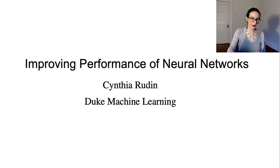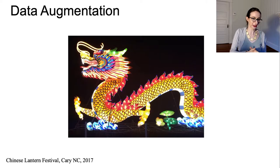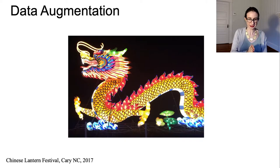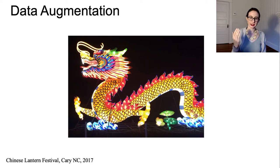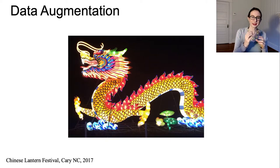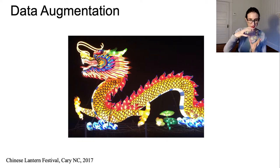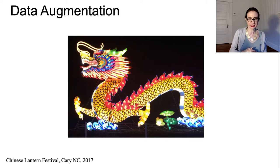Let's talk about some ways to improve the performance of our neural networks. First, let's talk about invariances. Very often we want neural networks to be invariant to certain transformations of images — like being able to detect a dog in the image no matter where the dog is, or even if you rotate the dog a little bit, you still want the network to detect it.